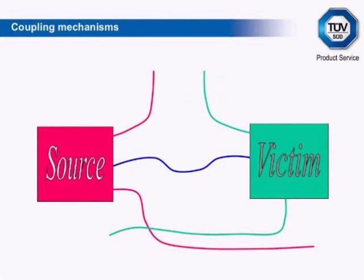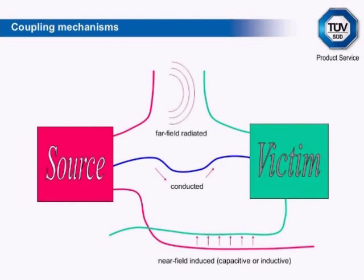Coupling mechanisms: putting source and victim together shows the potential interference routes that exist from one to the other. These can be identified as: 1. Conducted — through a direct connection from one to the other. 2. Near-field induced — by proximity of structures such as cables which have significant mutual capacitance or inductance. 3. Far-field radiated — where the structures behave as receiving or transmitting antennas.